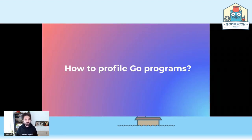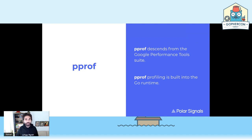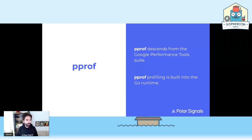So how do we actually profile Go programs? Probably some of you are already familiar — it's not news — because we have embedded profiling tools in the Go runtime itself, which is pprof. It's a descendant of the Google performance tool suite, which was built for C++ and then converted to other languages. Since the Go language itself comes from Google, they already built everything related to pprof into the runtime, and it's very well supported.